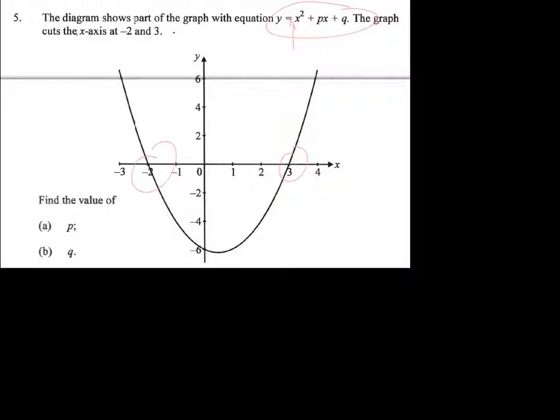So remember that in general, the intercept form is going to be y equals a times x minus p times x minus q, where these are the intercepts. However,